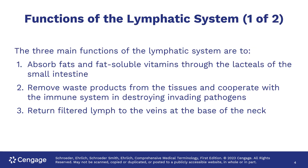There are three main functions of the lymph system: to absorb fat and fat-soluble vitamins in the small intestine, to remove waste from tissue and to coordinate with the immune system to fight infection, and to return the filtered lymph to the veins at the bottom of the neck.